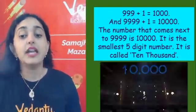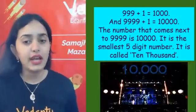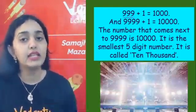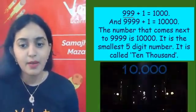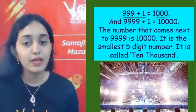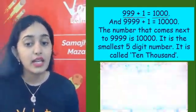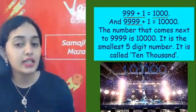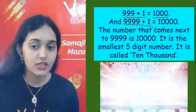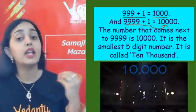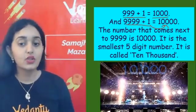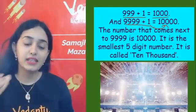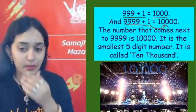Next is the introduction of 10,000. What comes after 999? Add one to get 1000. Similarly, what comes after 9,999? Add one and you get 10,000. Till now we had read up to 1000, but from this class we also learn about 10,000. What comes after 99,999? Add one and we get one lakh. One lakh is the smallest six-digit number, and we will deal with lakhs in Class 6.